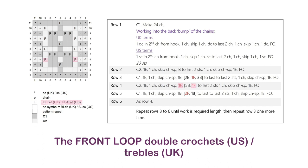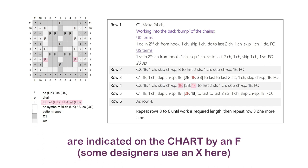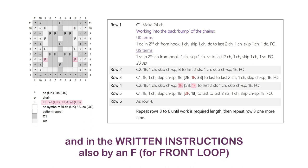The front loop double crochets (US) or trebles (UK) are indicated on the chart by an F — some designers will actually use an X for that — and in the written instructions I also use an F, which stands for front loop.